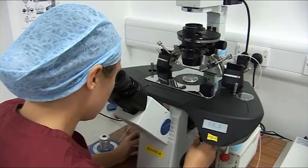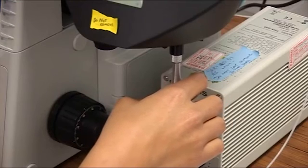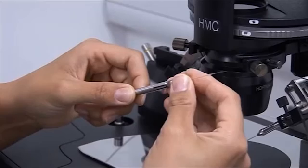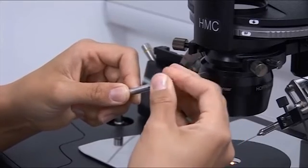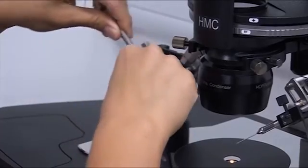We use a microscope to magnify the eggs and the sperm while we work with them. Micro-manipulators are attached to the microscope. On the end of the micro-manipulators we put fine glass needles. They are used to handle the eggs and the sperm.